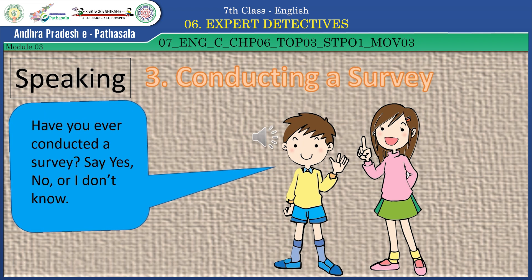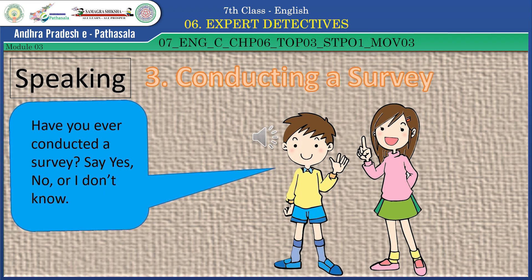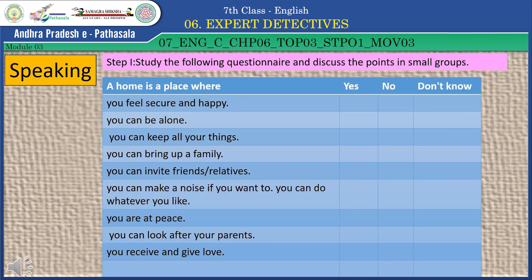Let's move on to conducting a survey. Have you ever conducted a survey? Say yes, no, or I don't know. To conduct a survey, there are four steps. Step 1: Study the following questionnaire and discuss the points in small groups. A home is a place where you feel secure and happy. You can be alone. You can keep all your things. You can bring up a family. You can invite friends or relatives. You can make a noise if you want to. You can do whatever you like. You are at peace. You can look after your parents. You can receive and give love. Discuss with your friends and fill the column with yes, no, or I don't know, and show it to your teacher.